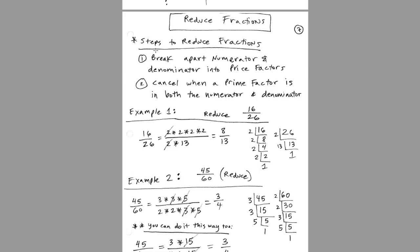Here are the steps to reduce fractions: first, break apart the numerator and denominator into prime factors. Then cancel when a prime factor appears in both the numerator and denominator — for example, 2 and 2 are both in top and bottom, so we cross them out. If there are no other common prime factors, that's the reduced fraction. Multiplying back out leaves us with 8 thirteenths.